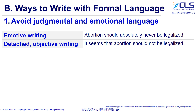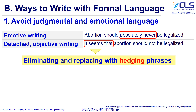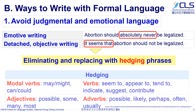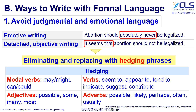Look at the sentences here. The first one, 'absolutely never,' is an emotive expression. In academic writing, the language used is suggested to be more objective. We can use hedging phrases like 'it seems that.' Hedging includes modal verbs, verbs, adjectives, and adverbs, as shown in the examples here.